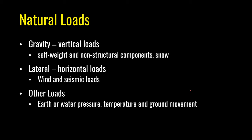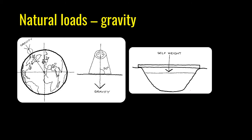Natural loads are divided into three categories. All structures resist gravity loads, which include self-weight, snow, and non-structural components — these are mainly vertical. Lateral loads are horizontal loads; wind and earthquake loads are typical examples. Other loads include earth pressure, water pressure, temperature changes, and ground movements.